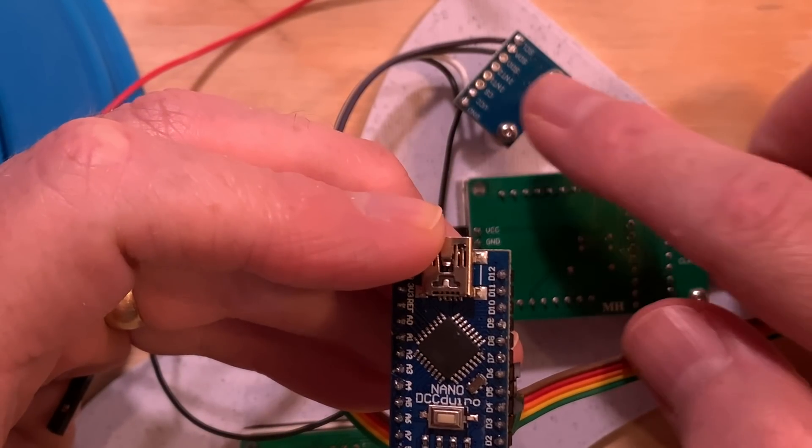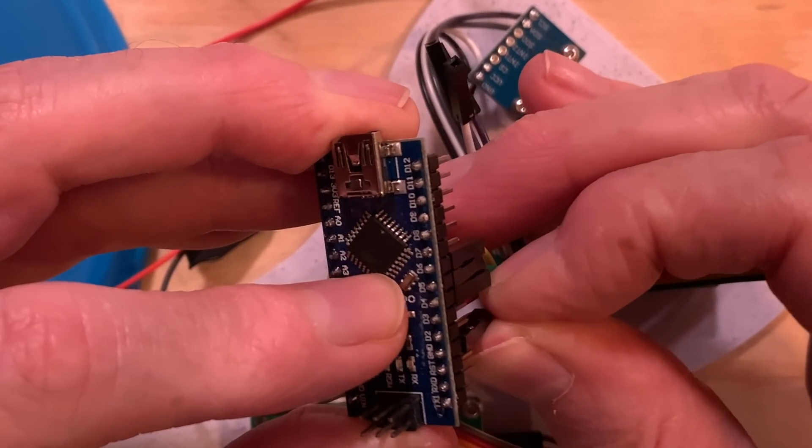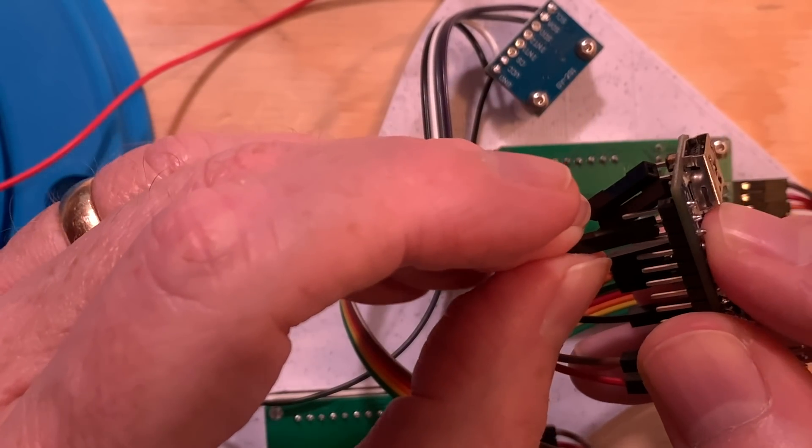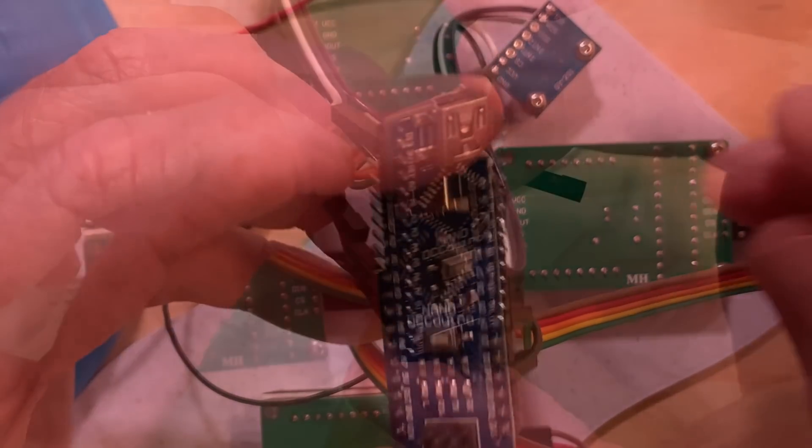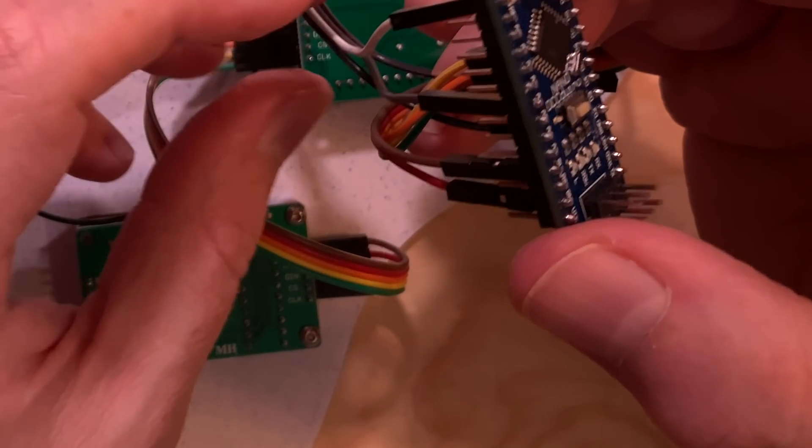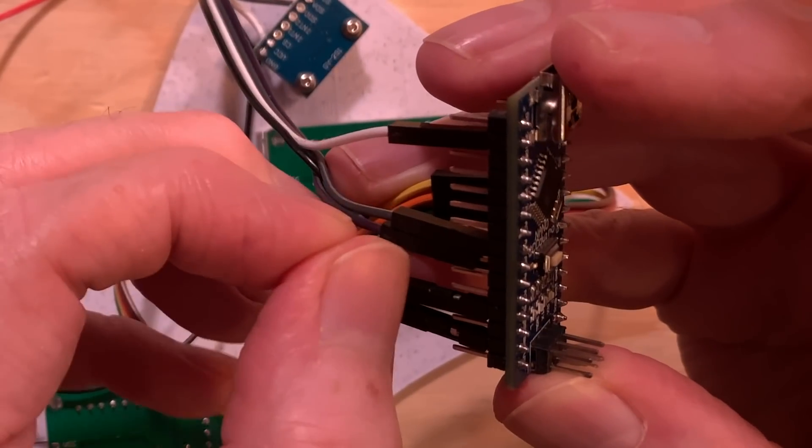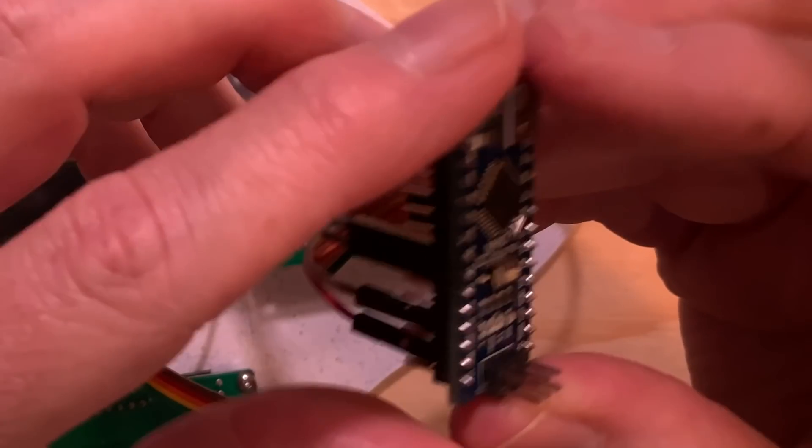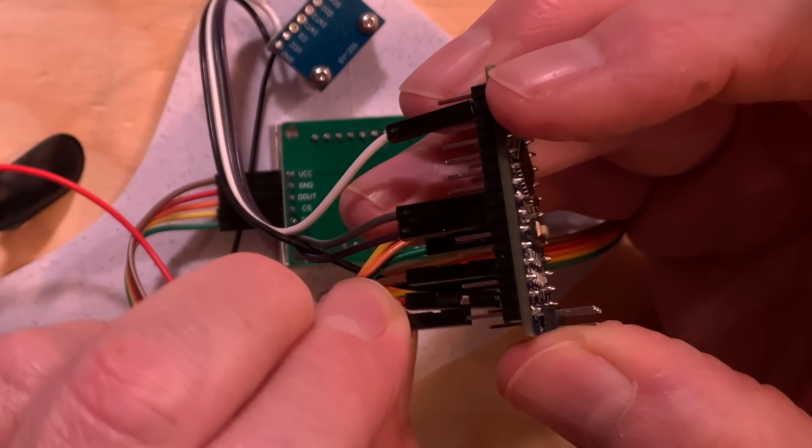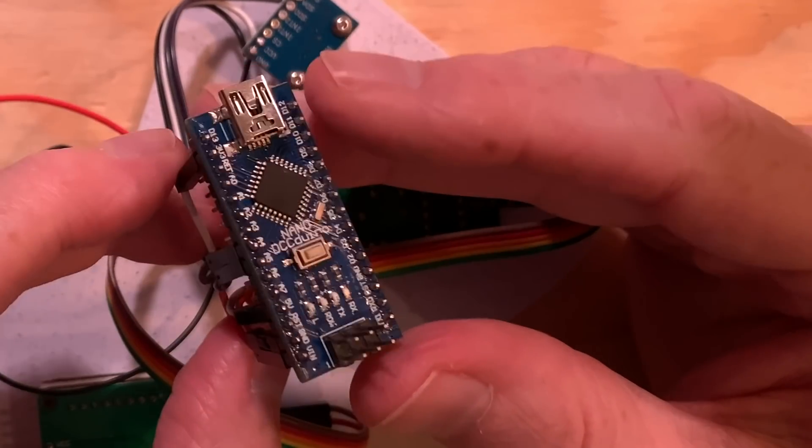Next, connect the accelerometer. Connect its ground wire to one of the ground pins on the Nano. Connect its VCC wire to the 3V3 pin on the Nano. Connect its SDA wire to the A4 pin on the Nano. And connect its SCL wire to the A5 pin on the Nano. And then the final connection to the Nano will be the red wire from the power switch. That'll go to the VN pin on the Nano.